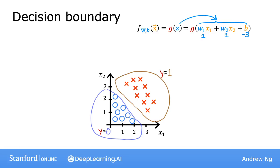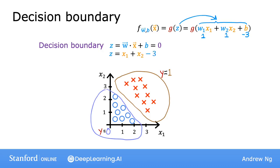Let's now take a look at how logistic regression makes predictions. In particular, let's figure out when w·x plus b is greater than or equal to 0, and when it is less than 0. There's a very interesting line to look at, which is when w·x plus b is exactly equal to 0. This line is called the decision boundary, because that's where you're just about neutral about whether y is 0 or y is 1. For our parameter values w1=1, w2=1, b=-3, this decision boundary is x1 plus x2 minus 3 equals 0, which corresponds to the line x1 plus x2 equals 3, shown over here.